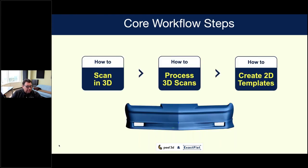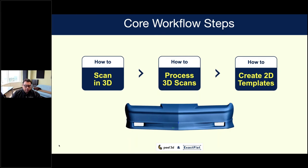We're going to cover the full workflow. There are three broad steps involved in making templates: first, we scan in 3D; next, we process the scan and de-feature elements not useful for making templates; and last, we convert from 3D to 2D to create our templates. This process is used by aftermarket template makers for vehicle wraps and paint protection templates, as well as OEM providers like 3M.